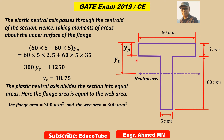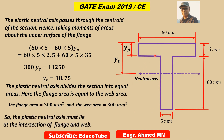So if we take the line at the intersection between flange and web, then this 300 and this 300 are equal. So we can conclude that the plastic neutral axis must lie at the intersection of the flange and web, because that line divides the whole area into two equal areas of 300 each. So we get YP equal to 5.